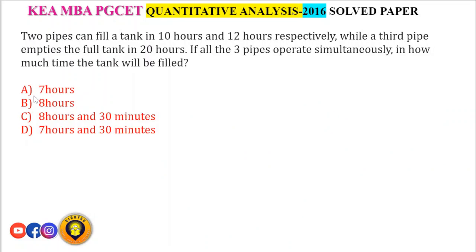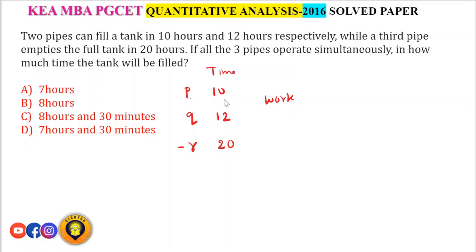Two pipes can fill a tank in 10 hours and 12 hours respectively, while a third pipe empties the full tank in 20 hours. Taking LCM of 10, 12, 20 = 60 as total work. Efficiency of P = 60/10 = 6 units/hour, efficiency of Q = 60/12 = 5 units/hour, efficiency of R = 60/20 = 3 units/hour (emptying).